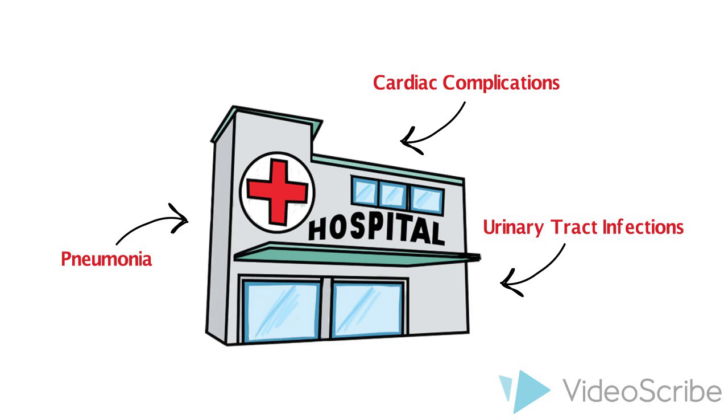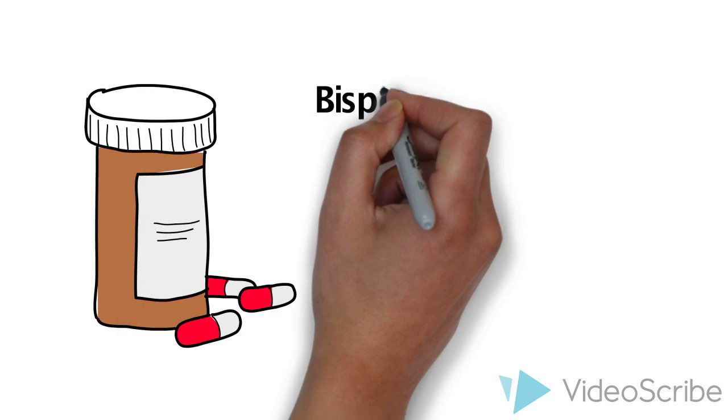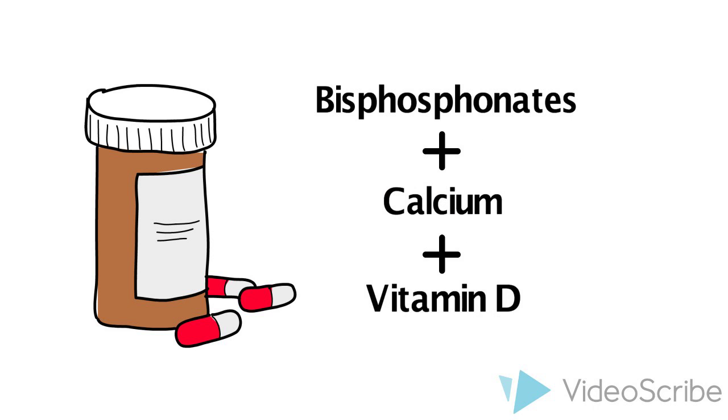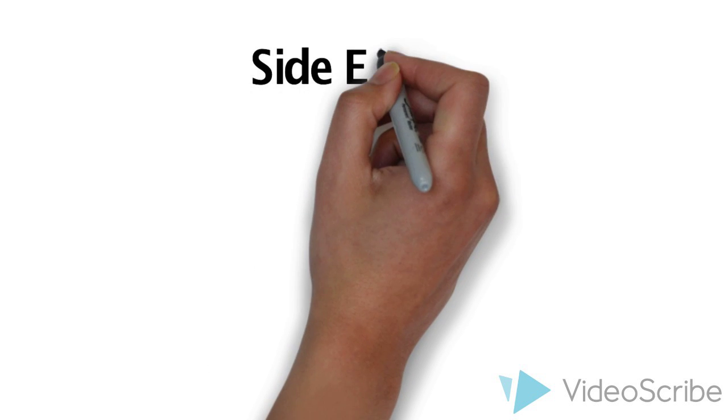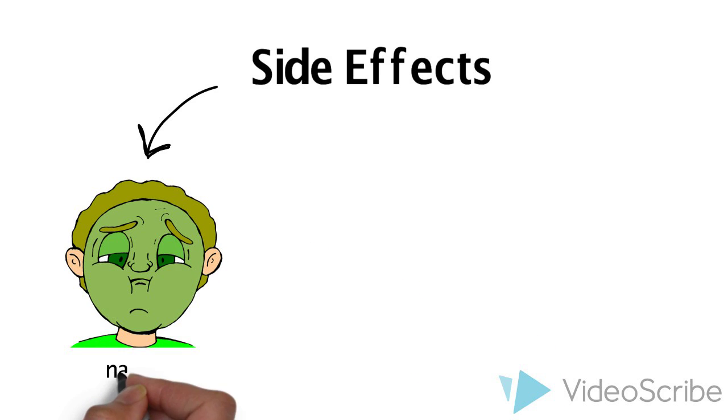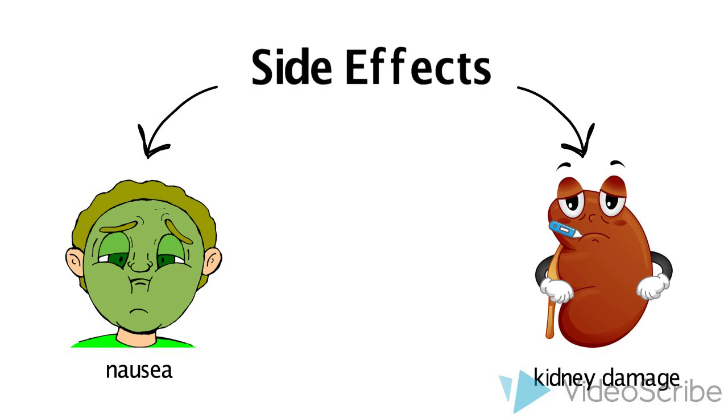Luckily, there are some treatment options to prevent those problems from happening. Current treatments for osteoporosis include bisphosphonates in combination with calcium and vitamin D supplements. However, adherence to this medication is low because they are presented with many side effects including severe nausea and kidney damage. Most patients stop the medication due to these undesirable side effects.